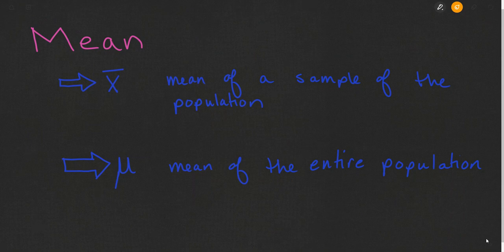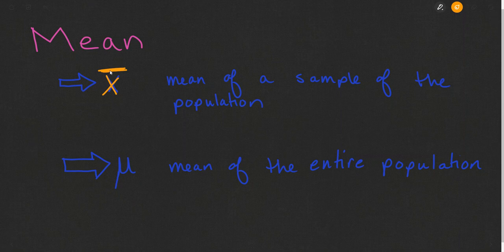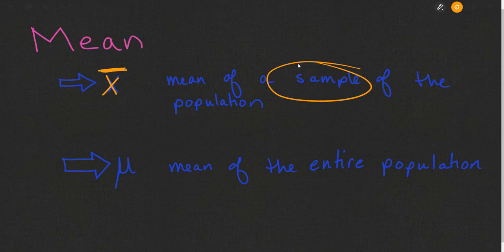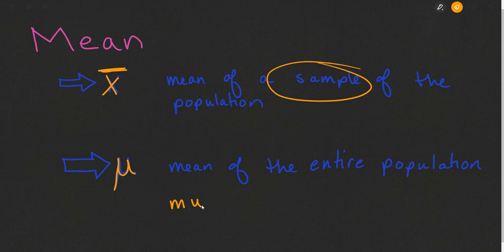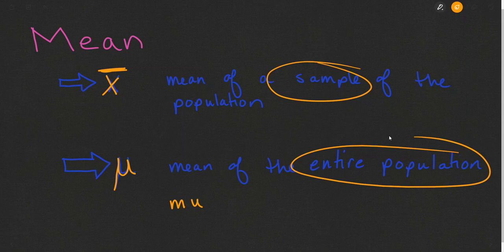Although you may know how to calculate a mean, you want to also ensure that you understand this symbol. We read the symbol simply as X bar — an X with a bar above it. X bar represents the mean of a sample of a population. It is also worth noting that the Greek letter mu represents the mean of the entire population. When we are asked to calculate a mean, it's implied that means the X bar, but make sure you're familiar with mu, which is the mean of the entire population.